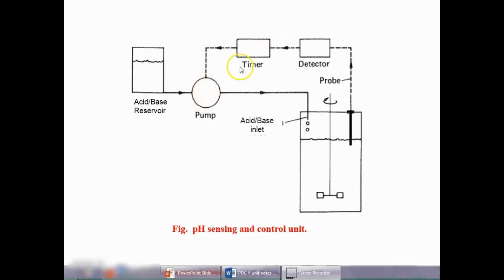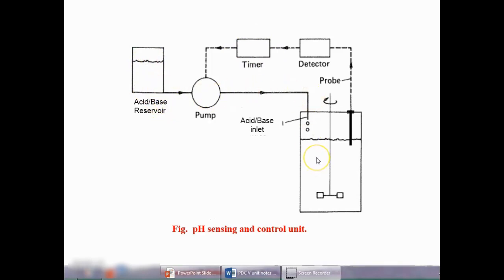The pump will start for a predetermined time — the addition cycle will be around 0 to 5 seconds. In those 0 to 5 seconds, either acid or base will come from the reservoir through the pump into the fermentation tank. For 5 seconds, this acid or base will be added to the fermentation process.